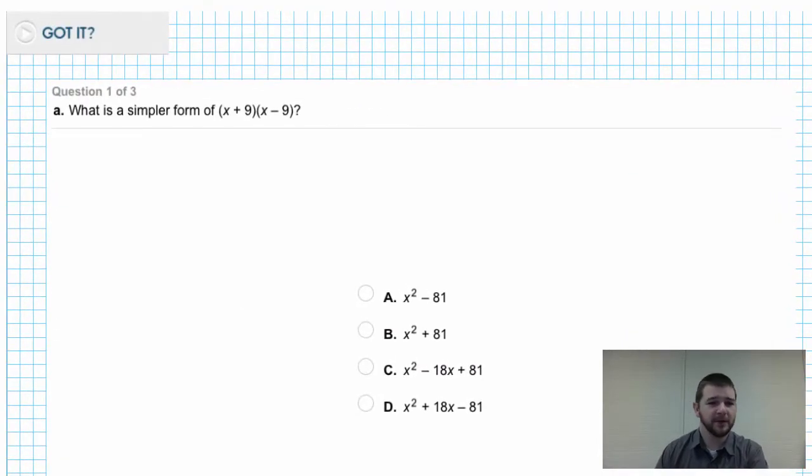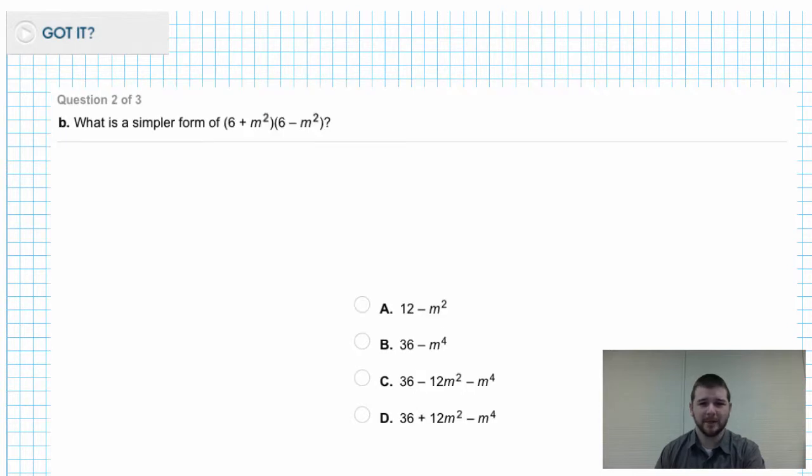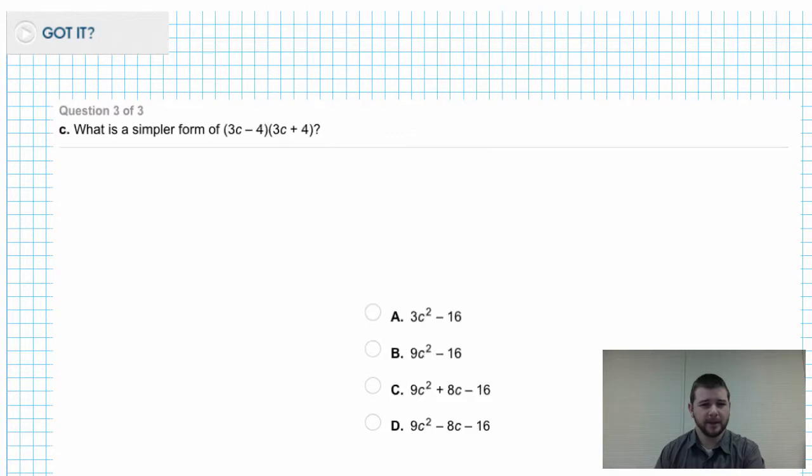And another opportunity to show that you have got it. Question one of three for this section of got it questions. What is a simpler form of X plus 9 times X minus 9? Work carefully and make your selection from the choices below. And got it question number two: What is a simpler form of 6 plus M squared times 6 minus M squared? Work carefully and make your selection from the choices below. And question three: What is a simpler form of 3C minus 4 times 3C plus 4? Work carefully and make your selection from the choices below.